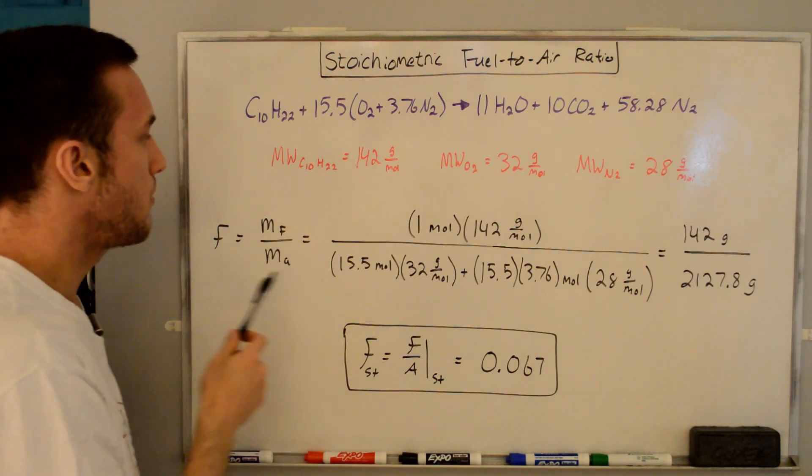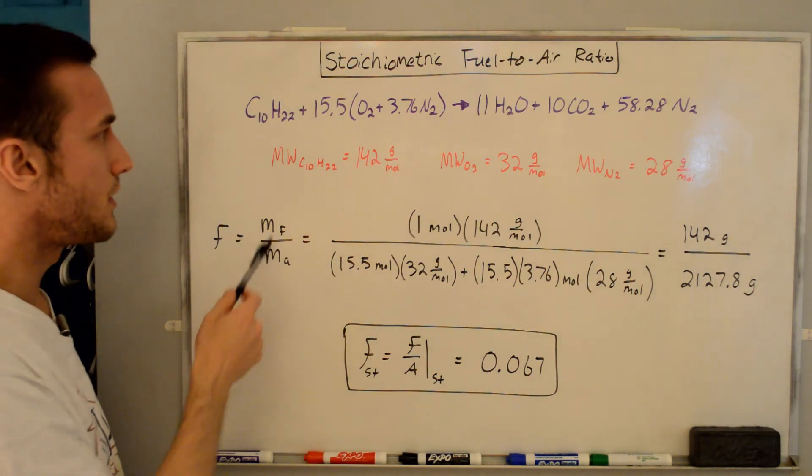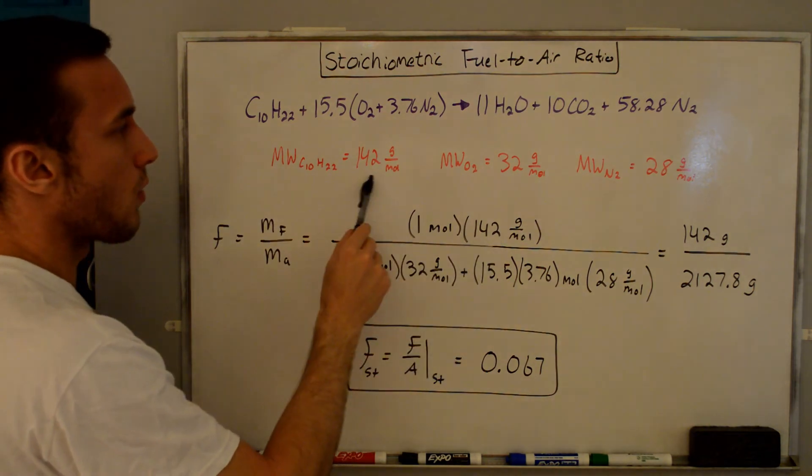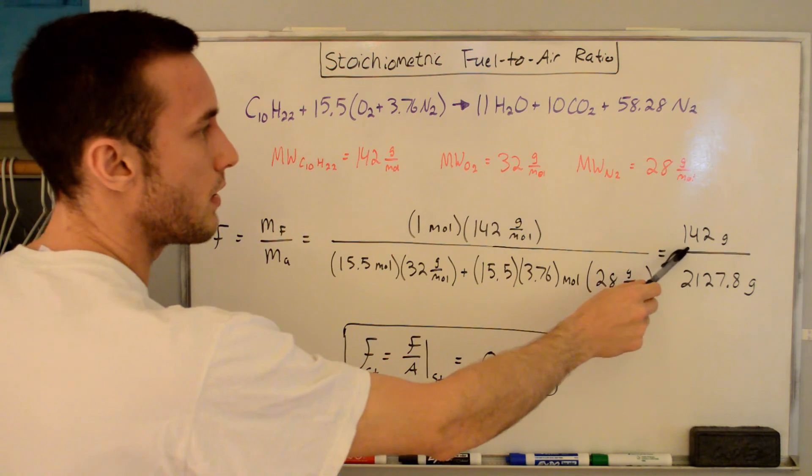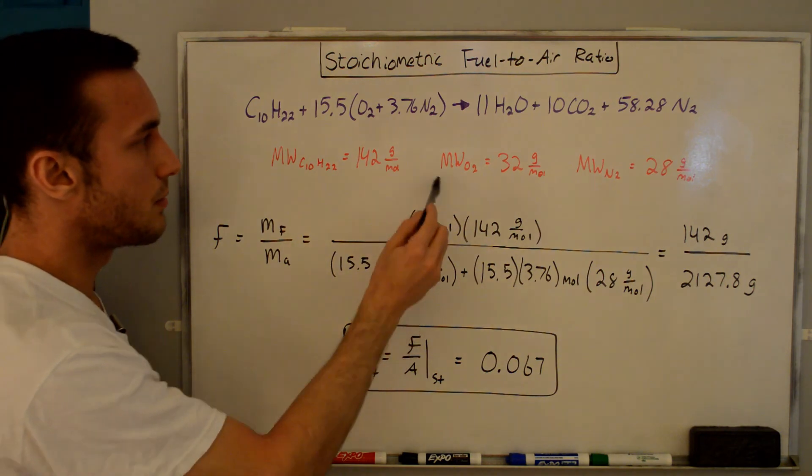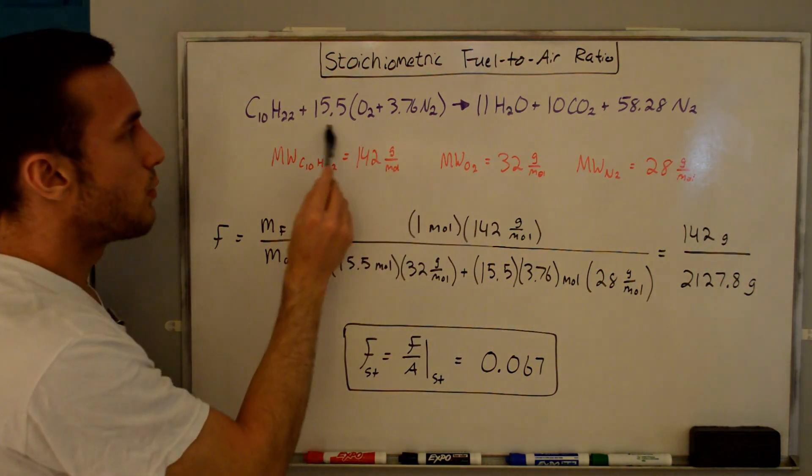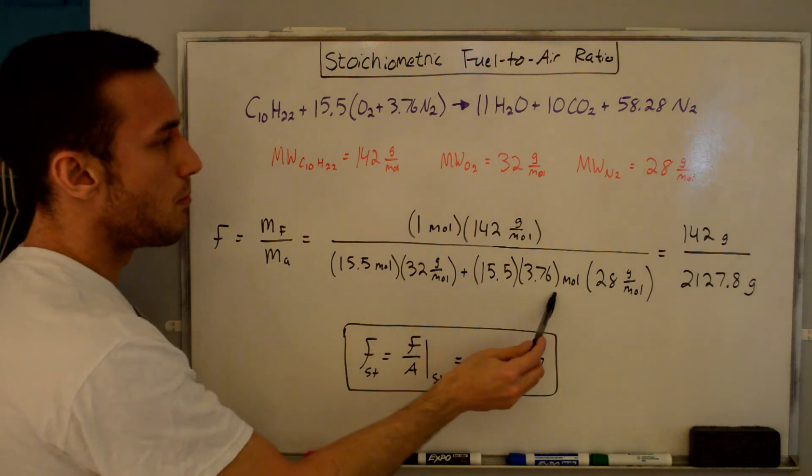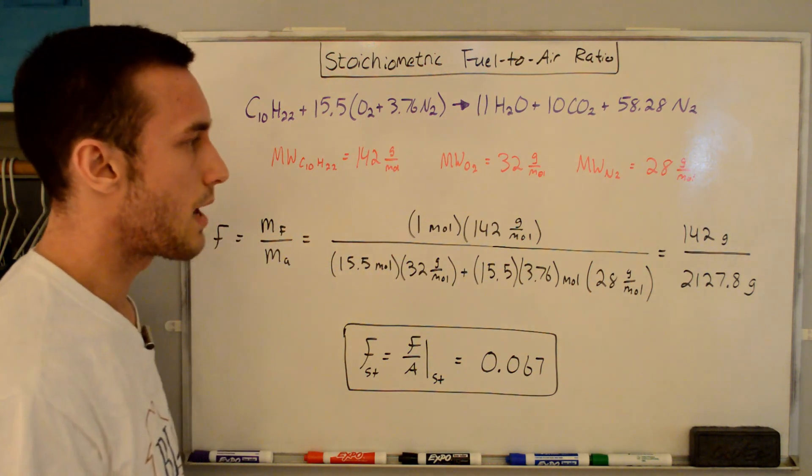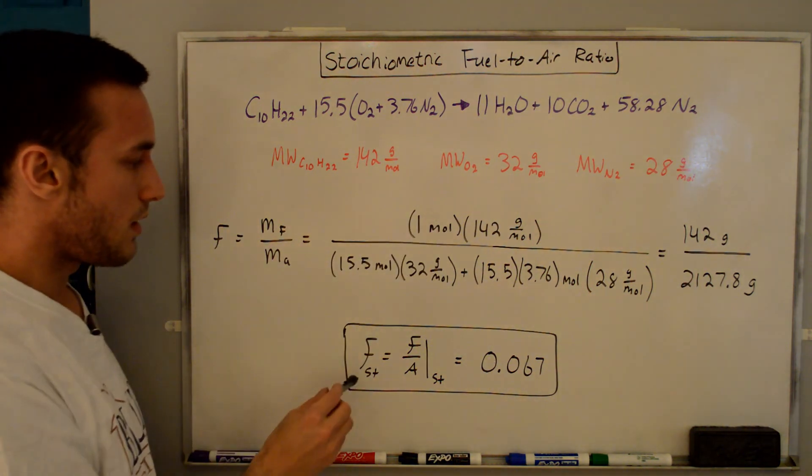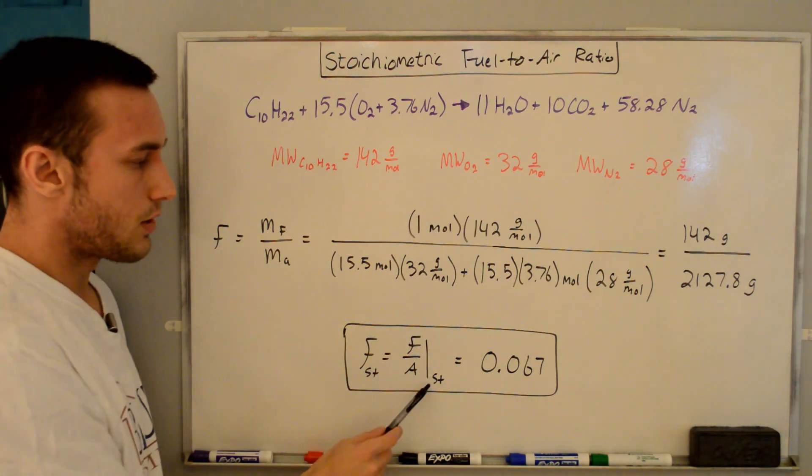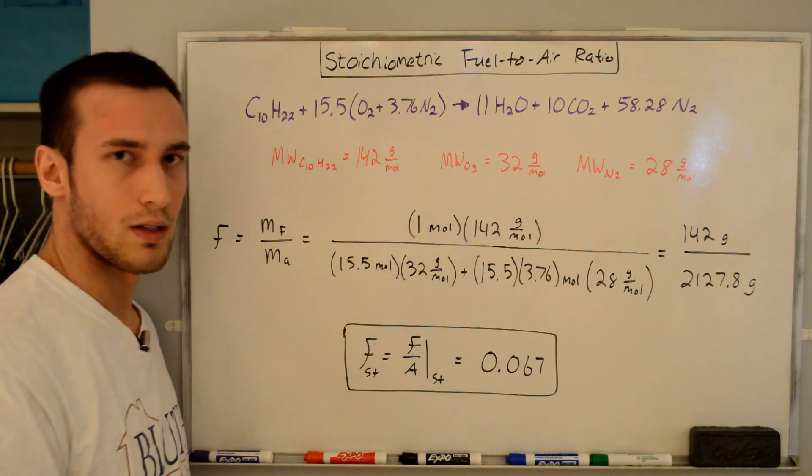And now finally, all we need to do is solve for the fuel-to-air ratio by finding the mass of the fuel and the mass of the air using these molecular weights that we solved for on the previous whiteboard. So the mass of the fuel is one mole times 142 grams per mole. And you can see that the moles cancel when we get grams on the top. So we get 142 grams in the numerator. For the air, we have 15.5 moles of O2. So 15.5 moles times the molecular weight of O2 is here. And then for the N2, we have 15.5 times 3.76 moles times the molecular weight of nitrogen, which is 28. And that gives us 2127.8 grams for the mass of the air. And if we divide those two numbers, we get the fuel-to-air stoichiometric, which you'll see written as F subscript ST is equal to or F over A stoichiometric. And that's going to be equal to 0.067.